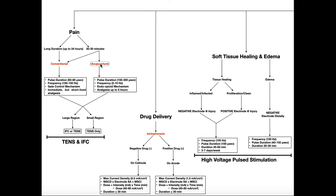Conventional and acupuncture are really just settings on both TENS and IFC; both have these two settings. So determining whether or not to use TENS or IFC really depends on the size of the region you're treating. When we're doing a large region, we can really use IFC or TENS — it doesn't really matter. But if the region of the body that we're treating electrically is very small, then we're really only going to use TENS because IFC requires four electrodes. You can't put four electrodes on a very small region, so for a small region you might tend to select TENS and not IFC.